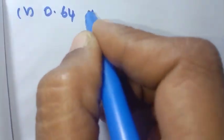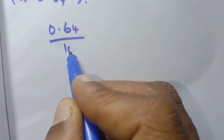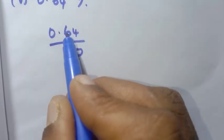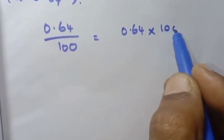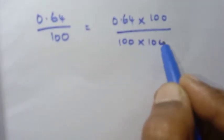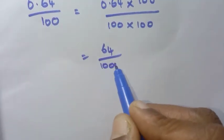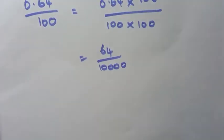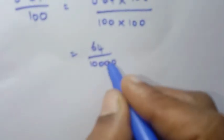Fifth sum: 0.64 percentage. 0.64 percentage is written as 0.64 divided by 100. There are 2 decimal places, so remove the decimal point by multiplying by 100 over 100.